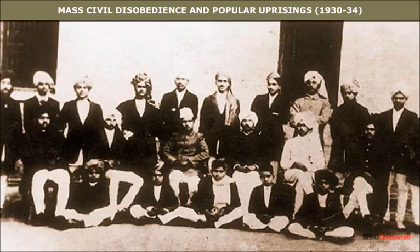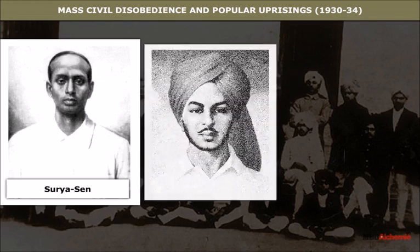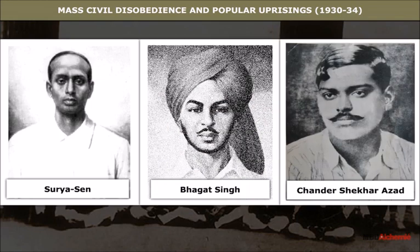Rise of Revolutionary Activities: The virtual failure of the Non-Cooperation Movement and the gloom that descended on the nationalist scene led to a new development — the feeling that better results could be achieved only through all-India organization and better coordination. Hence, a meeting of revolutionaries from all parts of India was called at Kanpur in October 1924. Surya Sen, Bhagat Singh and Chandrasekhar Azad along with many others became household names and living symbols of Indian nationalism.